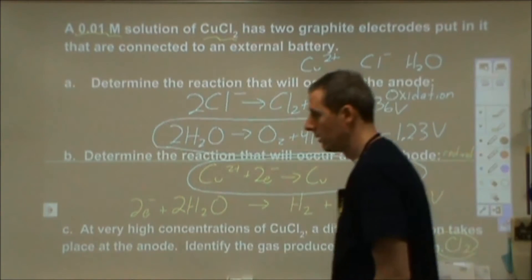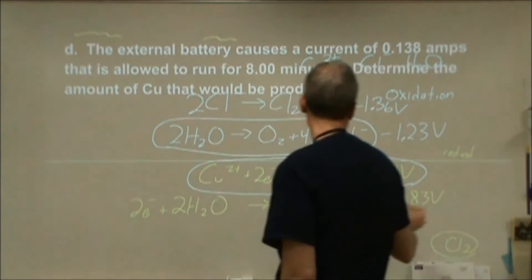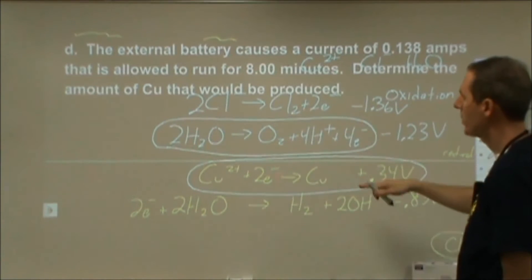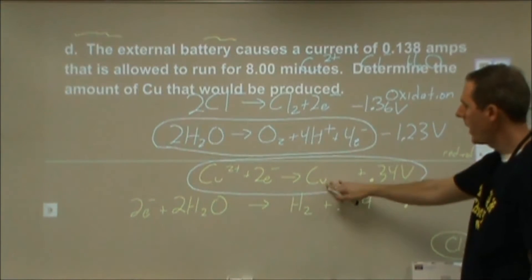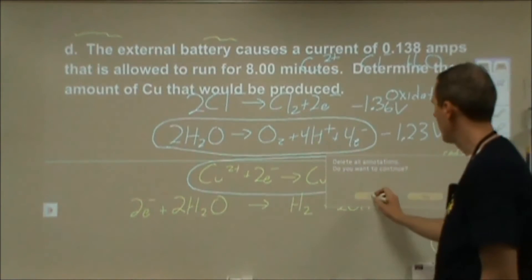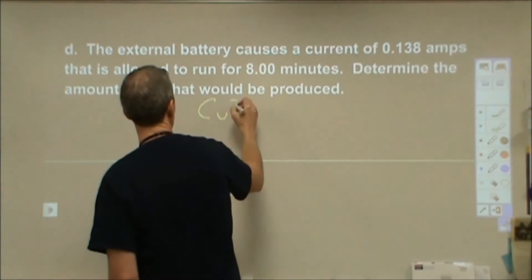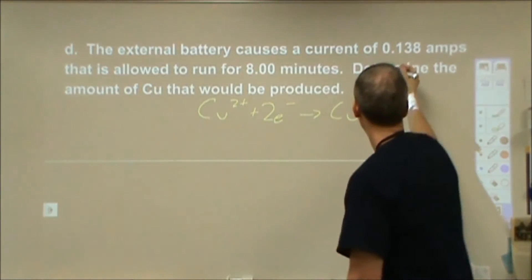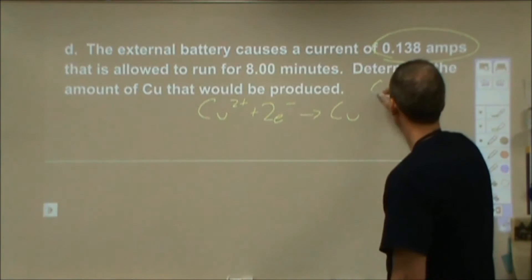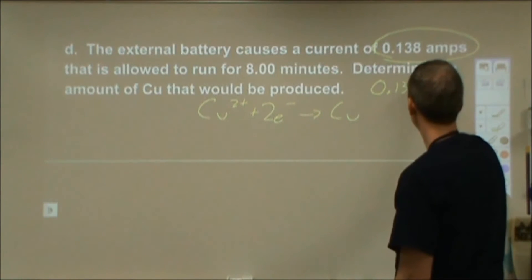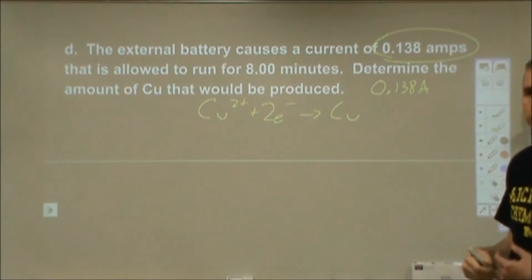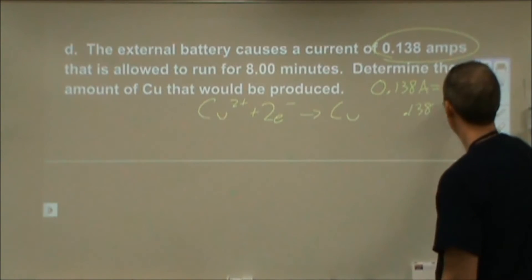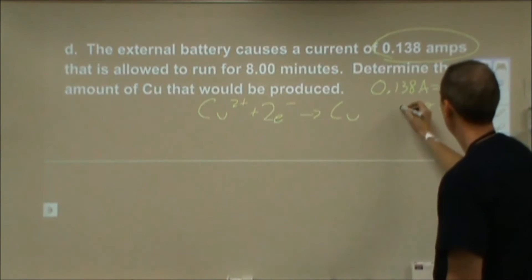In reality you're probably going to see a mixture of both, and that mixture trends increasingly toward chlorine gas as we increase the concentration of the copper 2 chloride — and specifically the chloride. Now we run our battery for about 8 minutes with a certain current. We want to know how much copper is going to be produced. We're going to be using this stoichiometric approach, which is standard for these types of electrolysis problems.